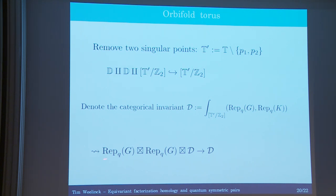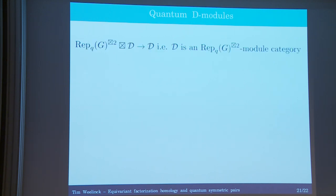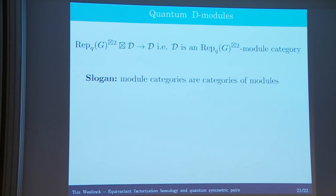What does it mean that we have a functor as such? D is appearing as a module category. Module categories, if you're lucky, are much easier to understand because there's a lot of structure present. We'll make use of the following slogan: module categories should be categories of modules. So we need to understand what is the algebra object for which this category is appearing as a category of modules.